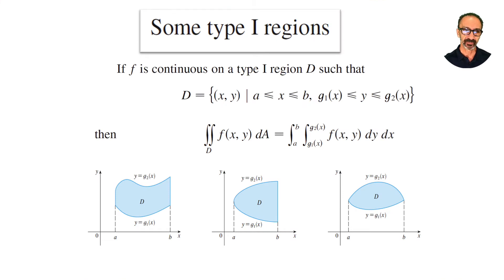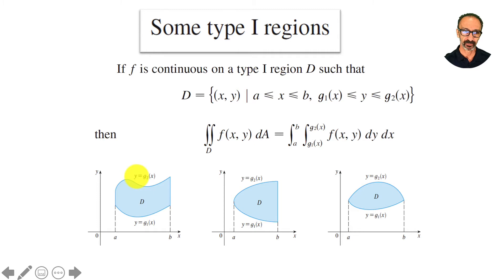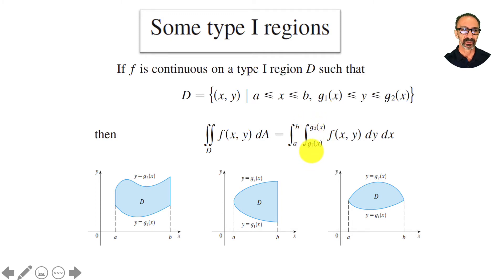Type one regions: in this form, when you go up and down, you are above y1 and below y2, where y1 and y2 are functions. So when you integrate with respect to y, you will have y1 as a function of x — that's g1 of x — and y2 as a function of x — that's g2 of x.